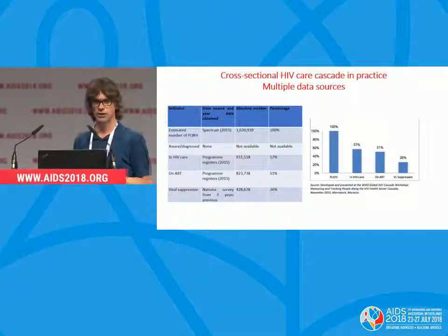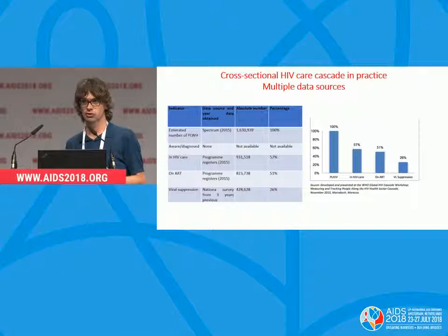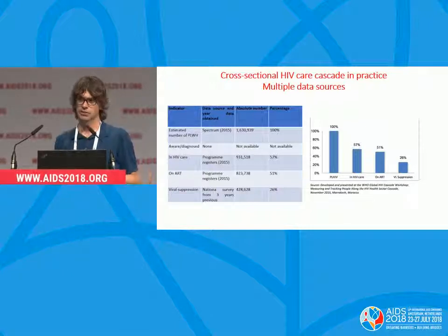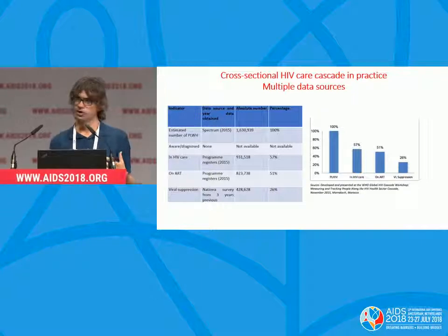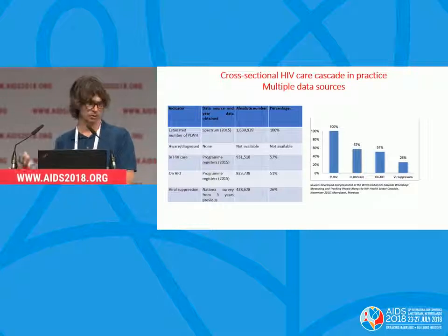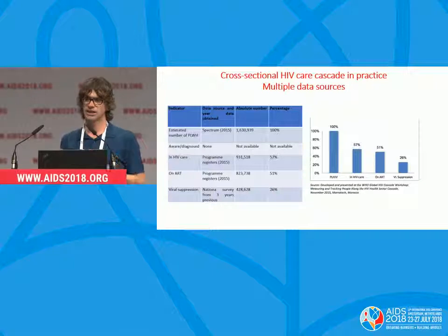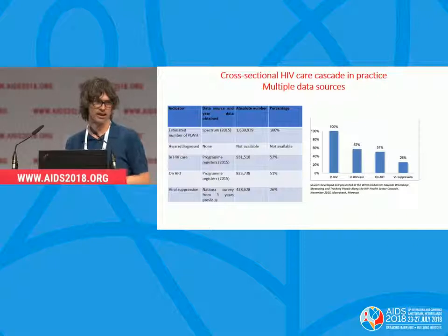In practice, many countries are doing somewhere in between. This is an example from a workshop that WHO supported with MESH, where a country tried to draw a cascade. Their denominator — the estimated number of people living with HIV — was drawn from Spectrum, the modelling tool that UNAIDS uses. They didn't feel they had good data on people aware of their status. The two numerators came from programmatic data on people in care and on ART. They had a survey from a couple of years previously estimating the proportion of people on ART who are virally suppressed — a hybrid approach highlighting the frailties of both survey and clinic data.